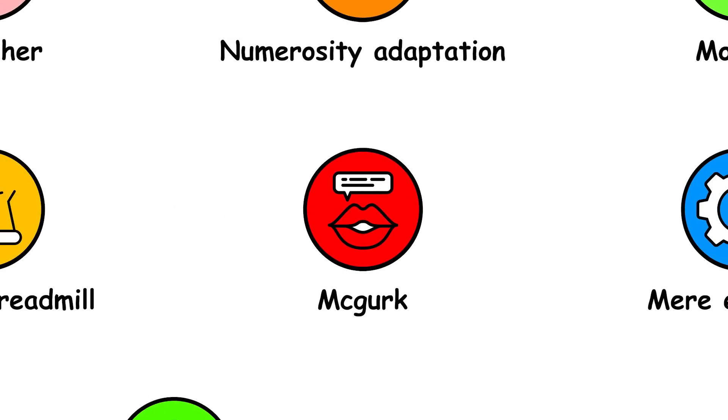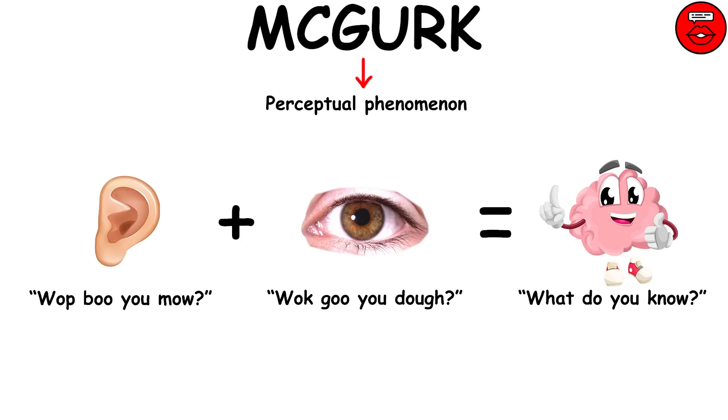McGurk effect. The McGurk effect is a perceptual phenomenon that demonstrates an interaction between hearing and vision in speech perception.